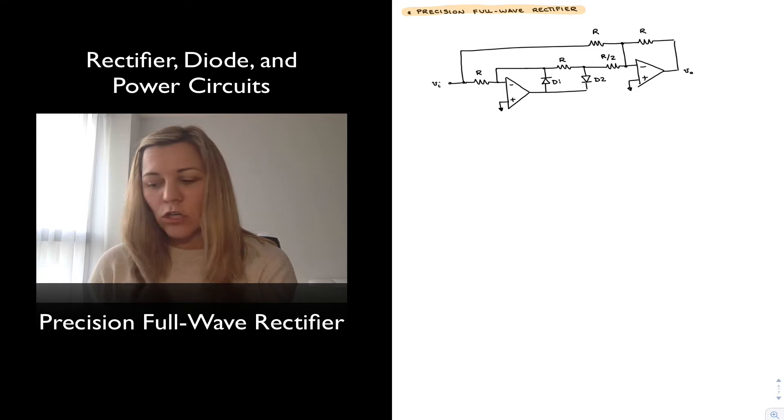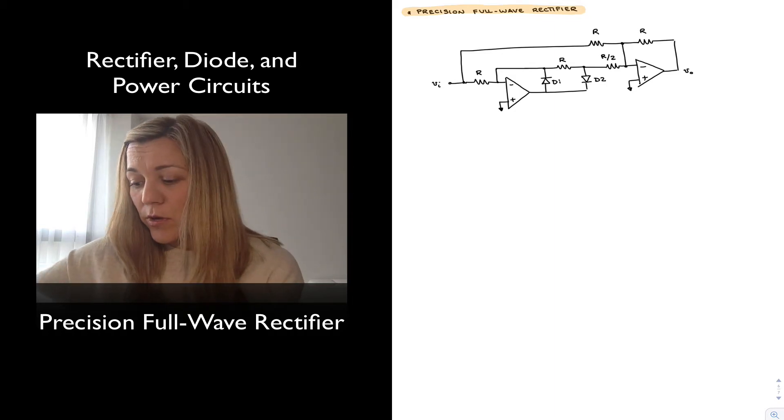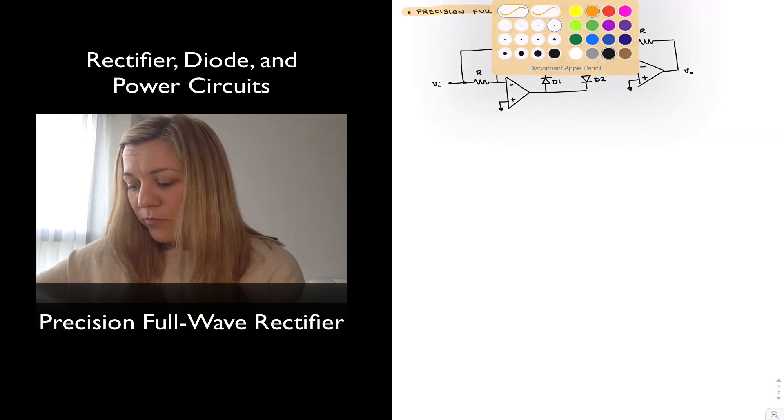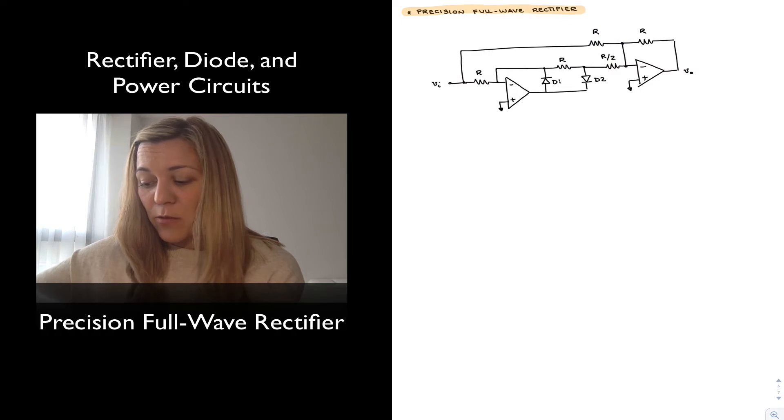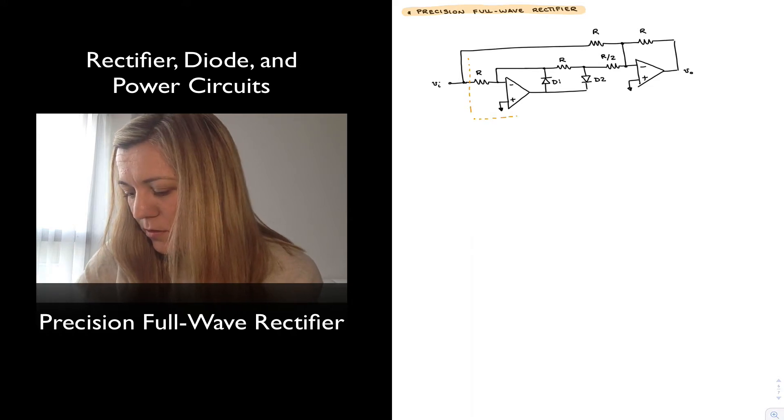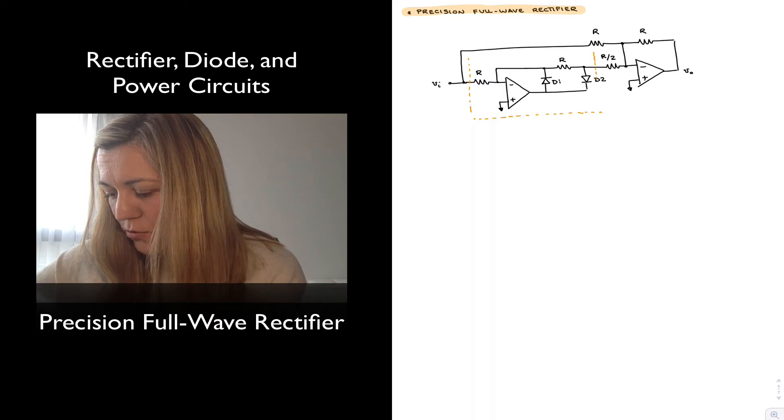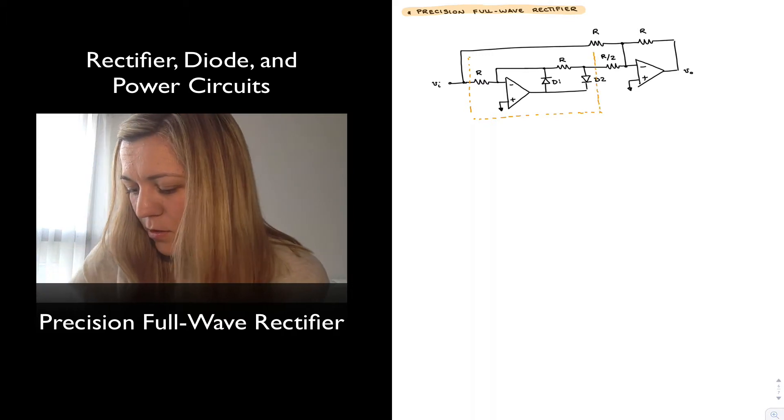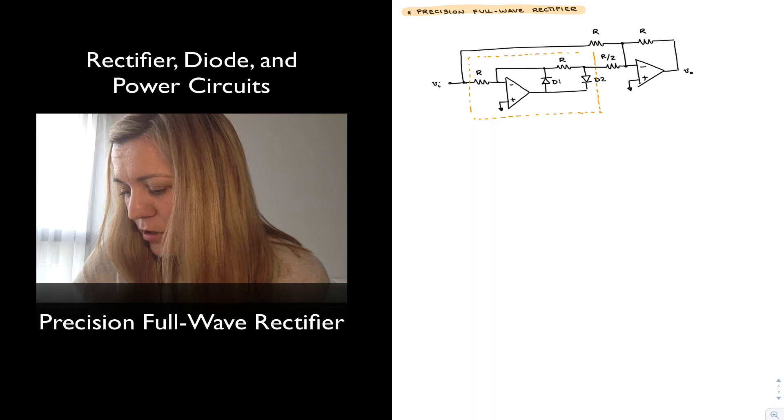But if we take a closer look, we can actually identify some structures that should be familiar by now. We can see that the first part consists of a precision half wave rectifier, and that would be this one over here, all the way up to D2 we have previously looked at.